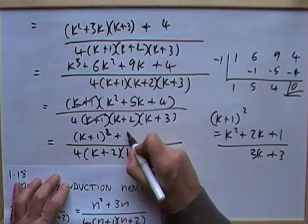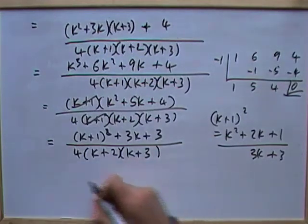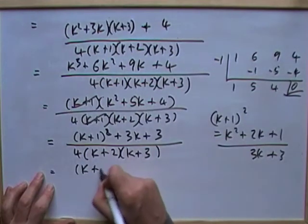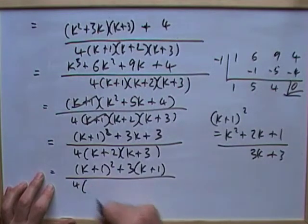So that means it leaves me another 3k plus 3, which is exactly what I want. But I'll put this in here just to show the working. So 3k plus 3, which means that I've now got k plus 1 squared plus 3 times k plus 1, all over 4 times.